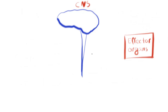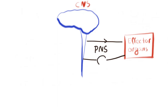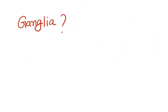Keep in mind that the peripheral nervous system is just a communication between the central nervous system and the effector organs. In the case of the autonomic nervous system, there are two neurons which make this communication, and in between these two neurons there is a structure called the ganglia.